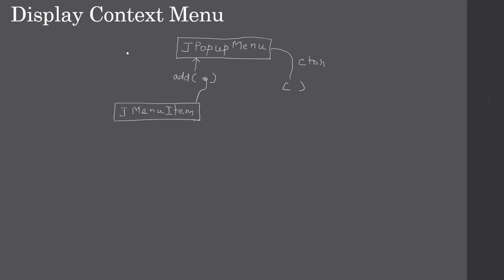Here the menu bar and JMenu are not involved. You directly create a JPopupMenu, then add JMenuItems to it — it can be one to n items. The top-level container in our case is the frame window.